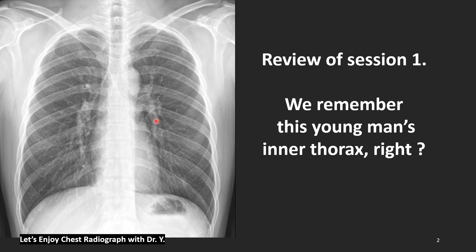We all remember this young man's inner thorax. Let's begin with large airway. This is trachea and carina, turning to right with right main bronchus, right upper bronchus, bronchus intermedius, right middle bronchus, lower bronchus, and go back to left main bronchus, upper bronchus, lingual segments, and then left lower bronchus.